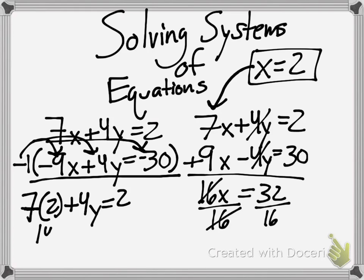7 times 2 is 14 plus 4y equals 2. Subtract 14 from both sides. And now, I'm left with 4y equals negative 12.